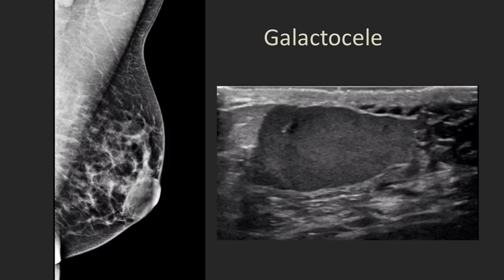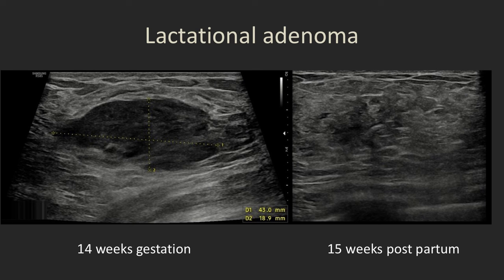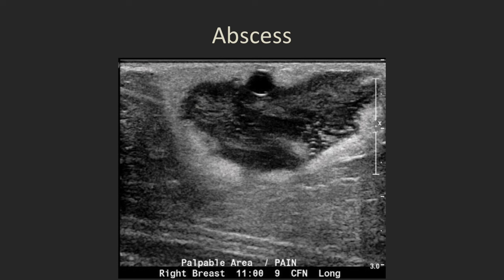Common things we see in pregnancy or lactation: mastitis and abscesses; galactoceles — milk cysts that on mammogram contain fat and appear radiolucent, with low-level echoes on ultrasound, usually resolving spontaneously; and lactational adenomas, which are a form of fibroadenoma that tend to grow fairly rapidly in pregnancy or lactation, are well-defined oval masses, and usually spontaneously shrink — one patient's was completely gone by 15 weeks postpartum. These do sometimes get biopsied during pregnancy. Here's a patient with an abscess who had mastitis that didn't resolve and ended up needing drainage.